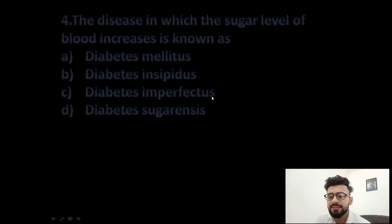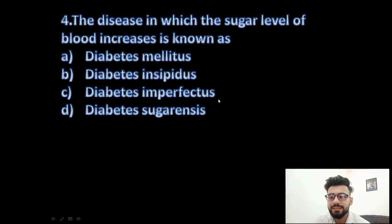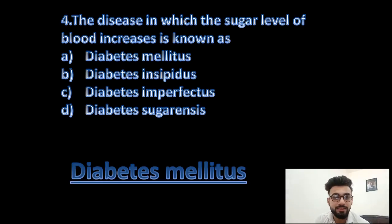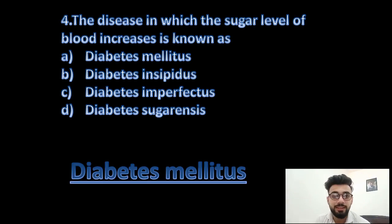Question 4: The disease in which the sugar level of blood increases is known as diabetes mellitus, diabetes insipidus, diabetes interfectus, or diabetes sugariness? The answer is diabetes mellitus — this is the type of diabetes in which the sugar level in the blood increases.